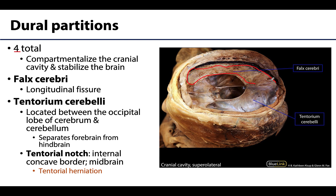The falx cerebri is located in the longitudinal cerebral fissure, so it's in the sagittal plane between the cerebral hemispheres. That longitudinal fissure is located between the two cerebral hemispheres — you would have one cerebral hemisphere facing you and one on the other side of the falx cerebri. It has a very distinctive sickle shape and will actually house both the superior and inferior sagittal sinuses; the superior sagittal sinus can be seen running right here.